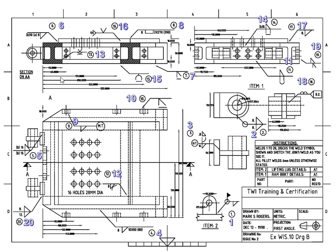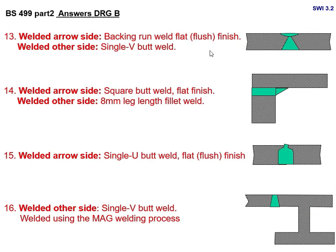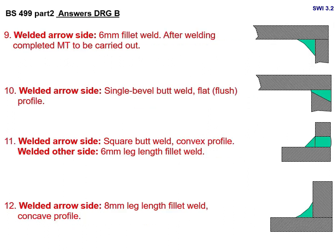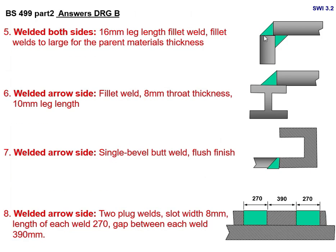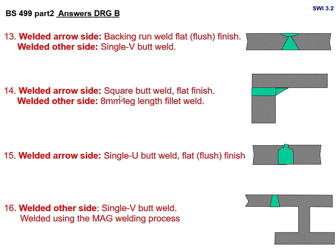Joint number 13: welded arrow side — backing run weld, flat finish; welded other side — single V-butt. You configure the joint this way and write it in the answer sheet. Joint number 14: one side is a square butt weld with flat finish; the other side is an 8 mm leg length fillet weld. So you have two different weld types — a butt weld on one side and a fillet weld on the other.